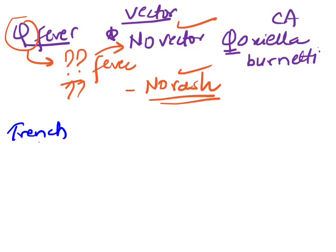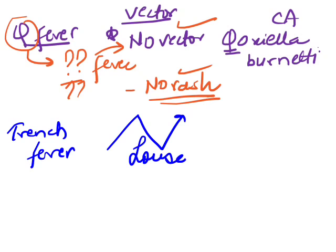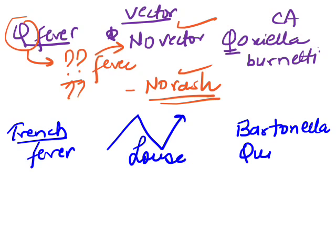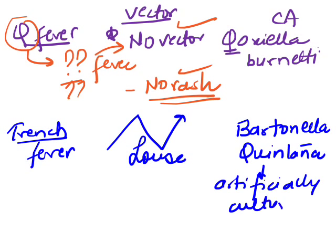Next is trench fever. We saw that with louse we have epidemic, trench, and relapsing — so trench fever's vector is louse. The causative agent of trench fever is Bartonella quintana (also called Rochalimaea quintana). It is the only Rickettsia — though now excluded from the group — which can be artificially cultured.